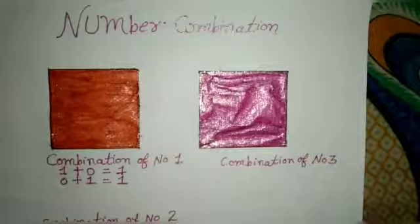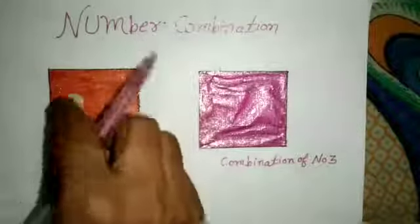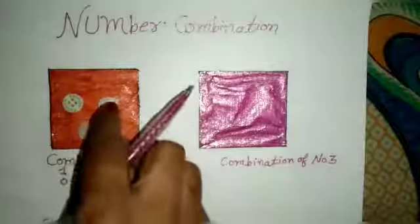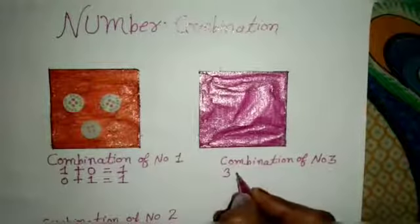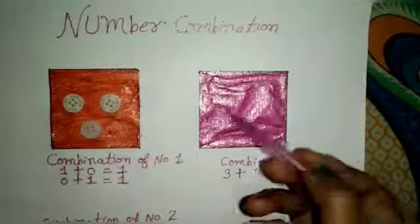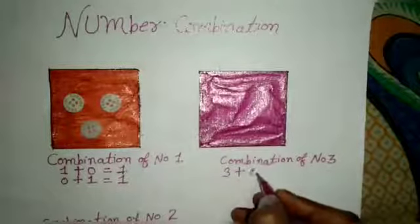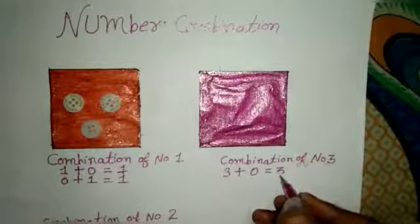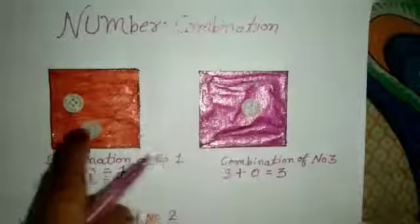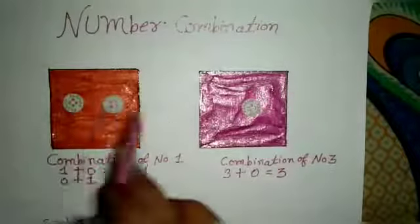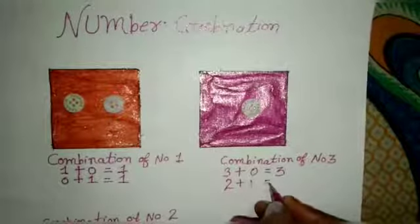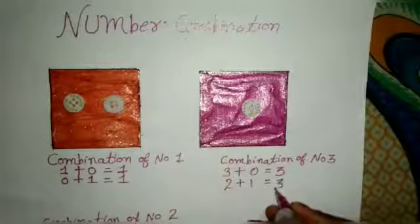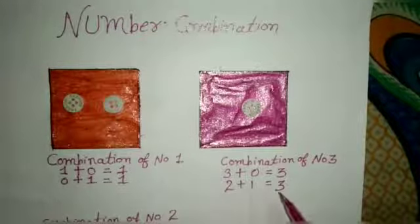Now number combination of number three. How many buttons I shift in box first? Three. Three plus here is no button in the second box — three plus zero equal to three. Now I shift one button into the second box: two plus one equal to three.